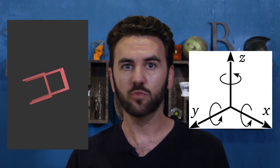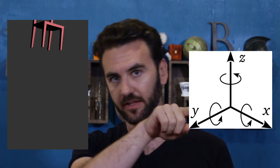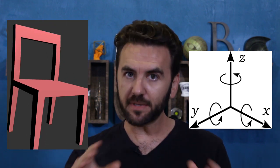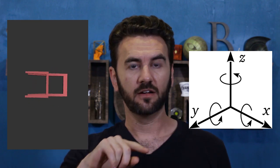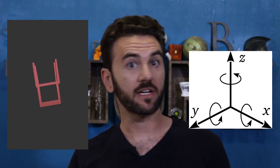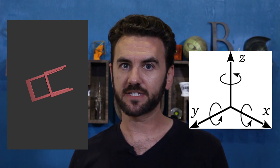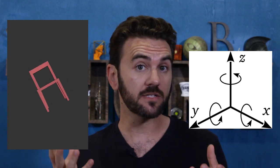Imagine a chair floating in the void of outer space. Any motion of the chair can be described as a combination of six possible movements: moving in a straight line — up, down, left, right, forward, back — or spinning around three axes, this way, this way, or this way. If the chair can move and rotate in every direction, engineers would say that it has six degrees of freedom.